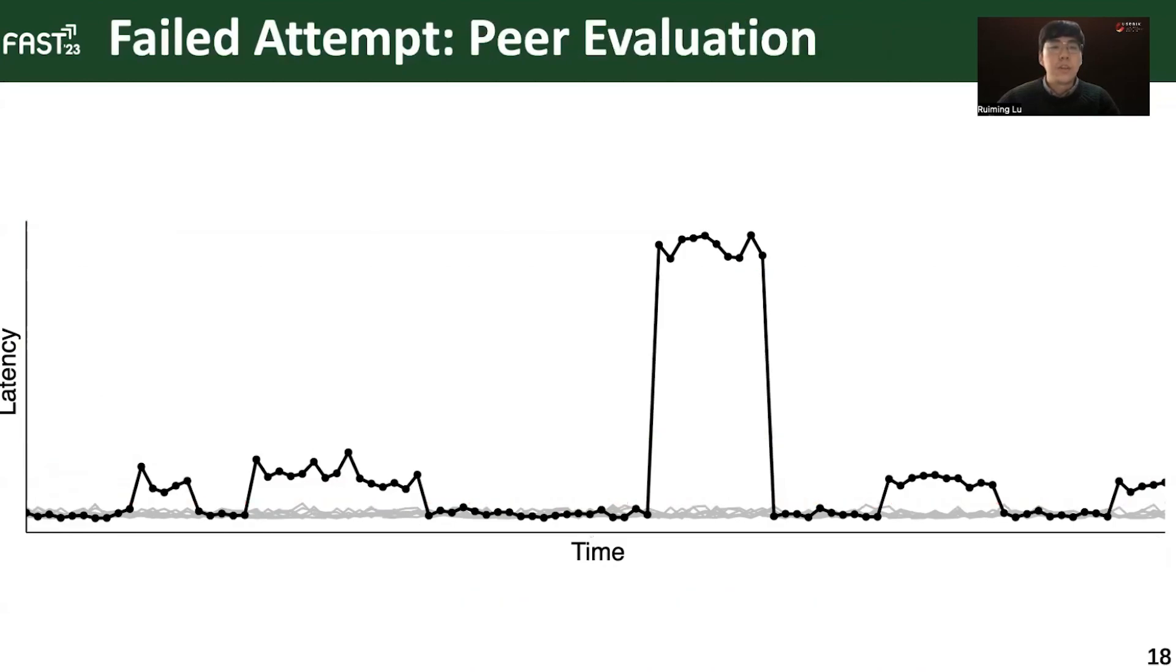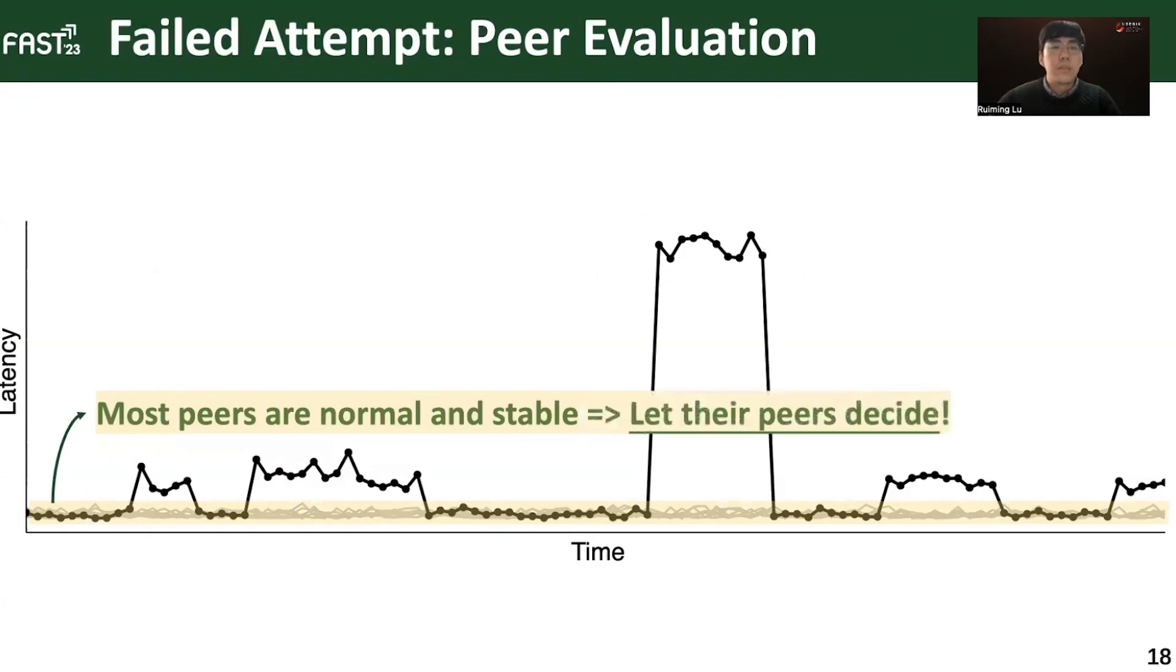The problem with the threshold filtering approach is not having an adaptive threshold for detection. In the previous example, we discovered that most peer drives in the same node are healthy with stable latency variations. Therefore, to identify the fail-slow, is it possible to compare the suspicious fail-slow drive with its normal peers from the same node? A straightforward idea is to let their peers decide. In our setup, drives from the same node are of the same specifications and are receiving similar workload pressure due to load balancing strategies.